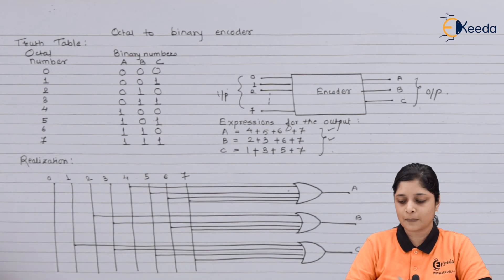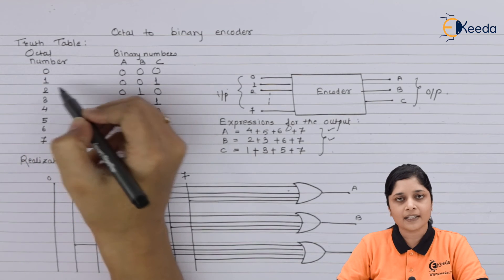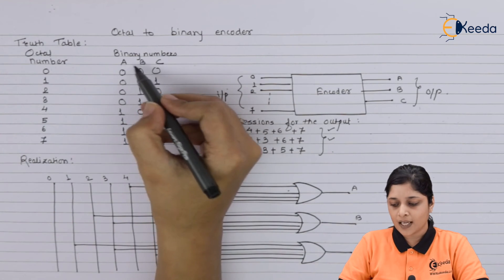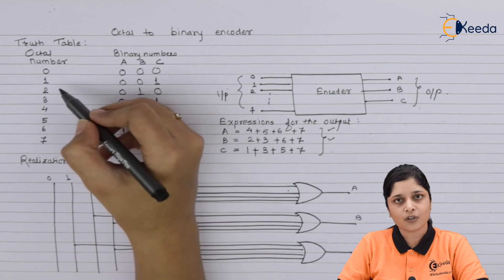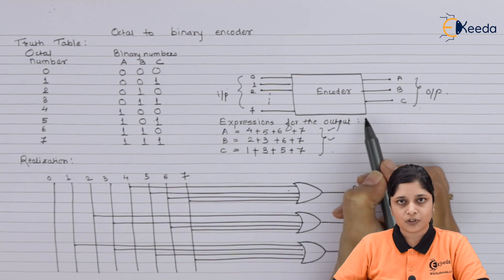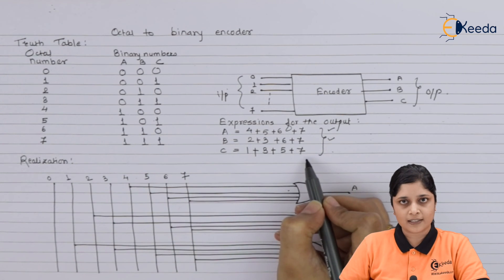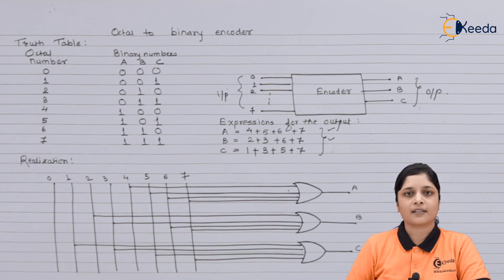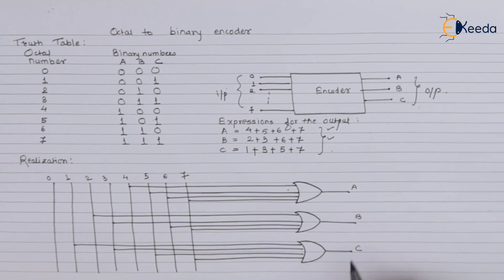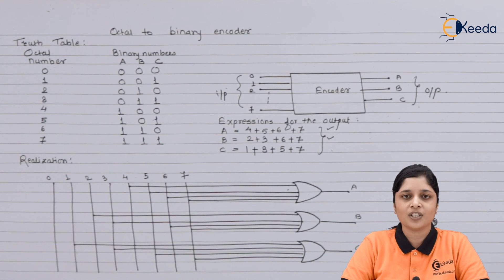Overall, what we have done here: we designed the truth table representing octal numbers and their 3-bit binary representations A, B, and C. Then we drew the block diagram showing inputs and outputs. According to the truth table, we designed the Boolean expressions, and using those expressions, we realized the encoder with 3 outputs. This is all about the Octal to Binary Encoder. Thank you for watching. Stay tuned with Ikeda and subscribe to Ikeda.